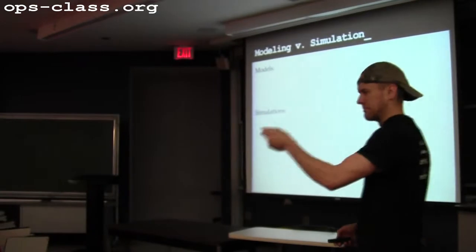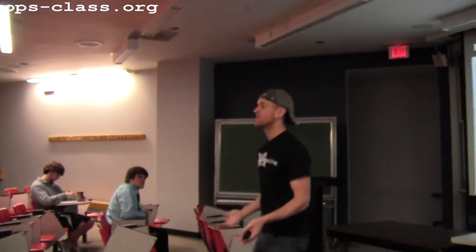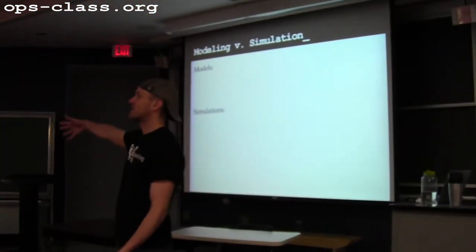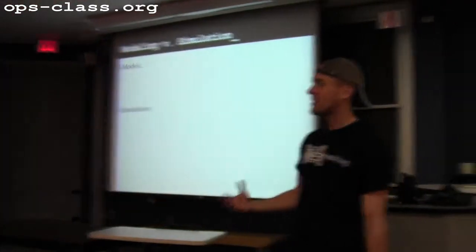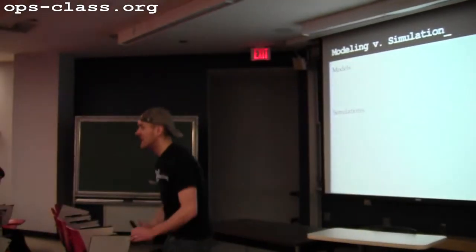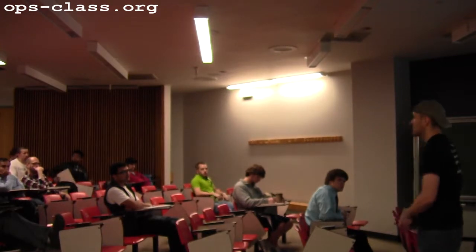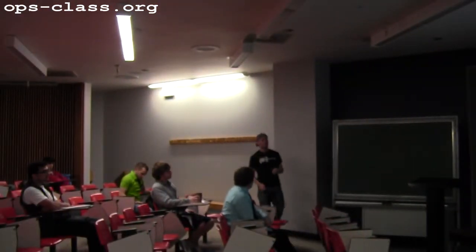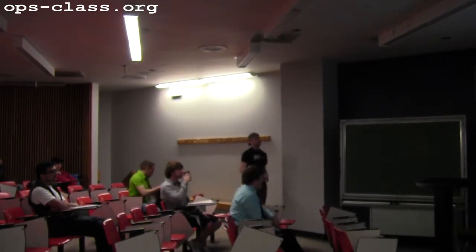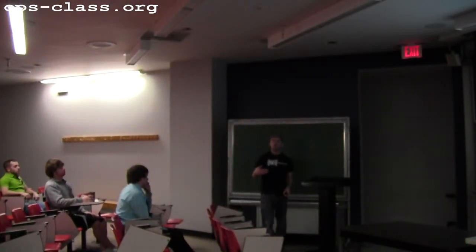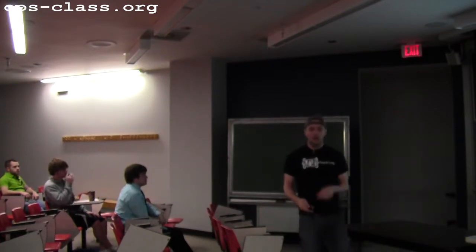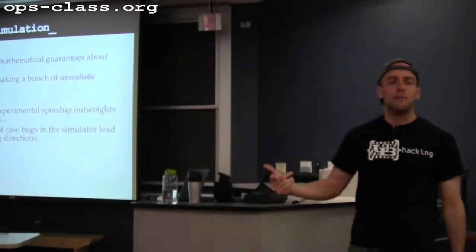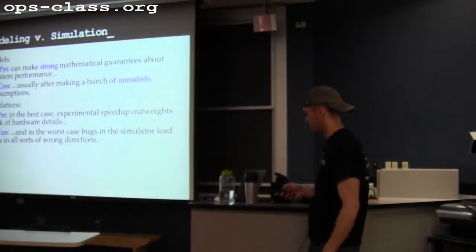What's one of the downfalls about simulations? I've got to write a simulator — now I've introduced this whole extra piece of code that has to be correct. It was hard enough before with code that had to work on my real system. Now I've essentially asked the person trying to improve performance to go out and write a bunch of other code that also has to be correct and then use that code to experiment with the code you were trying to work on in the first place. So simulators can have bugs. Models: we make strong mathematical guarantees after making unrealistic assumptions. Simulations: in the best case, the simulator is simpler and faster to work on than the real system.